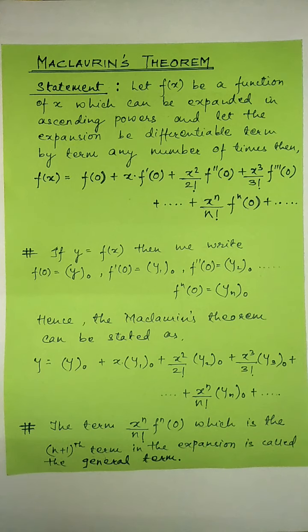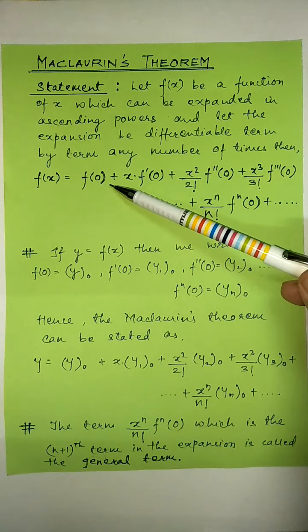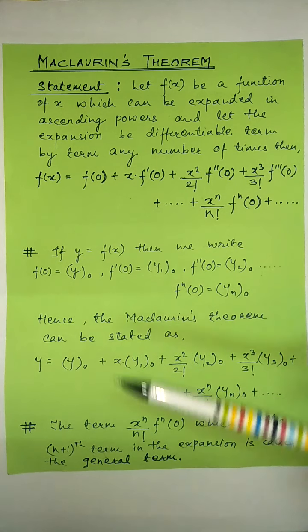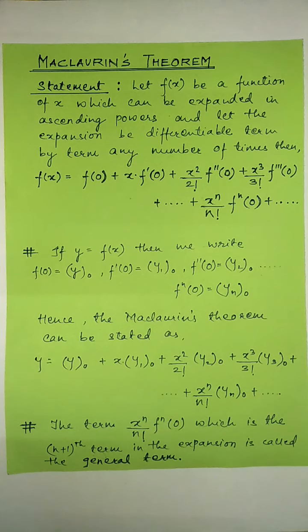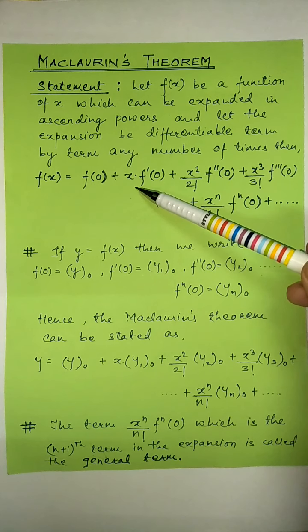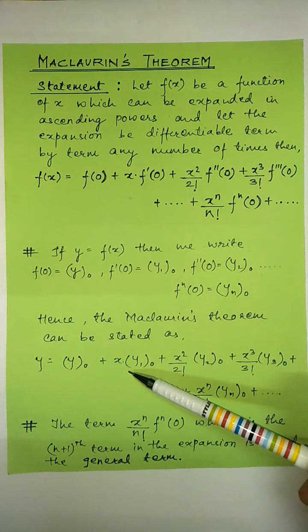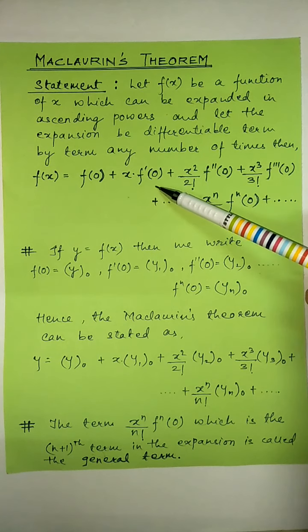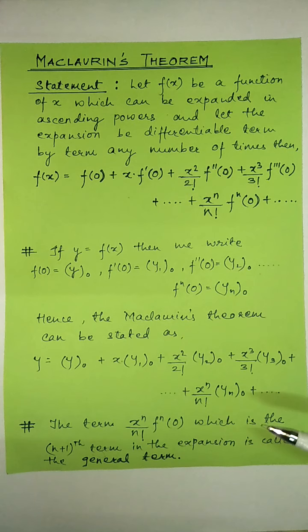Then we can write the Maclaurin's theorem as y equals: the first term is f of 0, which is written as y when x is 0. Then we have x into f dash of 0, so we write x into y suffix 1 — this is the first order derivative, and for f dash of 0 we are writing y suffix 1 when x is 0.